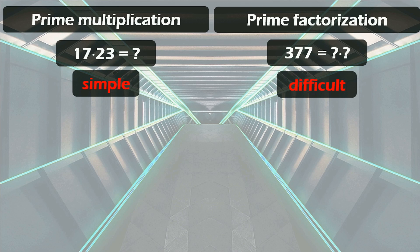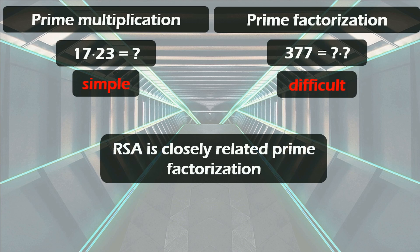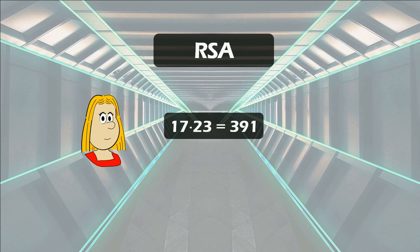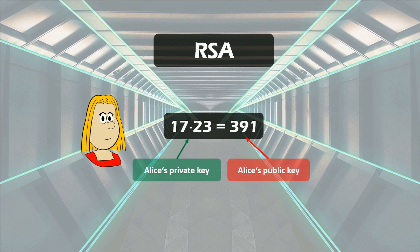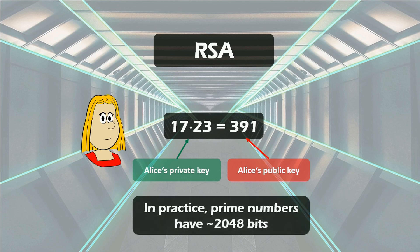In practice we are dealing with much longer, much higher numbers. This is also called a one-way function: simple to compute, but very difficult to do in the opposite direction. RSA — and I'm not talking about the conference, I'm talking about the crypto system — is closely related to prime factorization. If Alice uses it, she uses two prime numbers as a private key and the prime number product as a public key. In practice, the prime numbers consist of 1024 bits, and the public key has a length of 2048 bits.